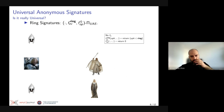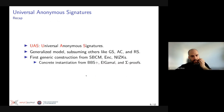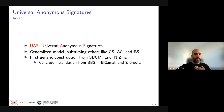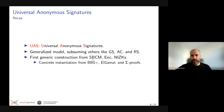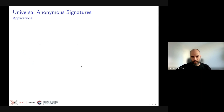As a recap, I've described how Universal Anonymous Signatures work. We give a generalized model that subsumes other primitives like group signatures and anonymous credentials. We give a first generic construction of UAS based on signatures over blocks of committed messages (SBCM), encryption, and NIZKs, and a concrete instantiation using BBS+, ElGamal, and Sigma Proofs.